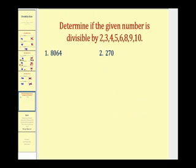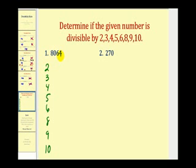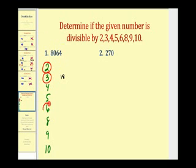Now let's determine if a given number is divisible by 2, 3, 4, 5, 6, 8, 9, and 10. The number ends in a 4, so it is divisible by 2. To check divisibility by 3, we sum the digits: 8 plus 0 plus 6 plus 4 equals 18. Since 18 is divisible by 3, so is the given number. And since it's divisible by both 2 and 3, it's also divisible by 6. For 4, the last 2 digits are 64, and since 64 is divisible by 4, so is the given number.